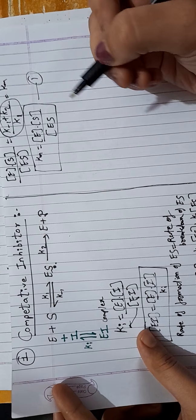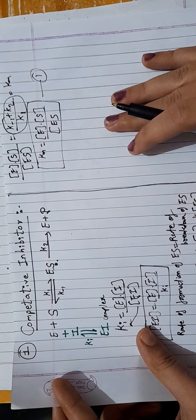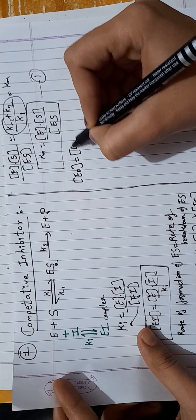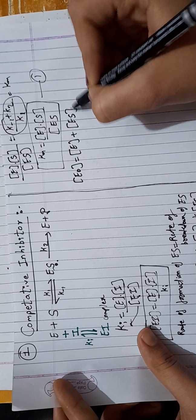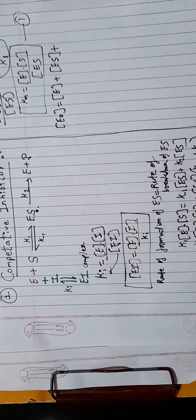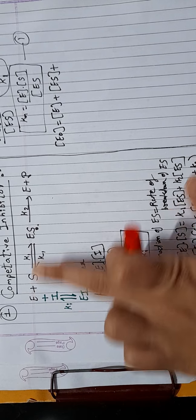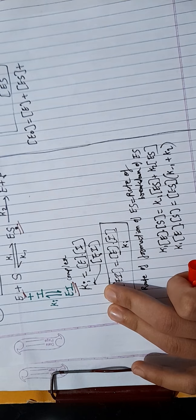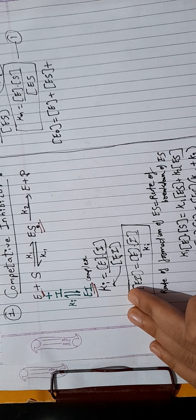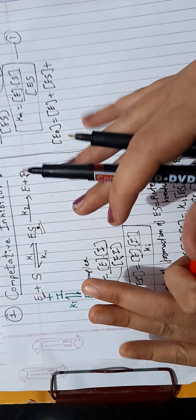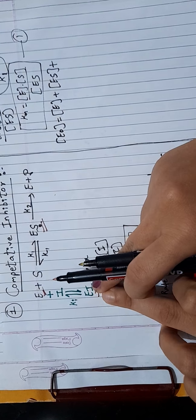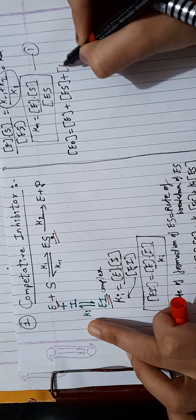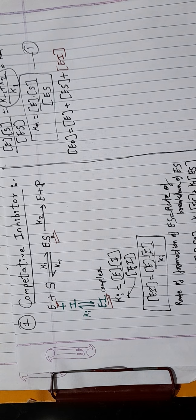The next step is to find the total enzyme. Here is where the change occurs compared to the uninhibited case. Total enzyme E0 equals free enzyme plus substrate-bound enzyme (ES) plus inhibitor-bound enzyme (EI). So E0 = [E] + [ES] + [EI], accounting for all complexes the enzyme can form.